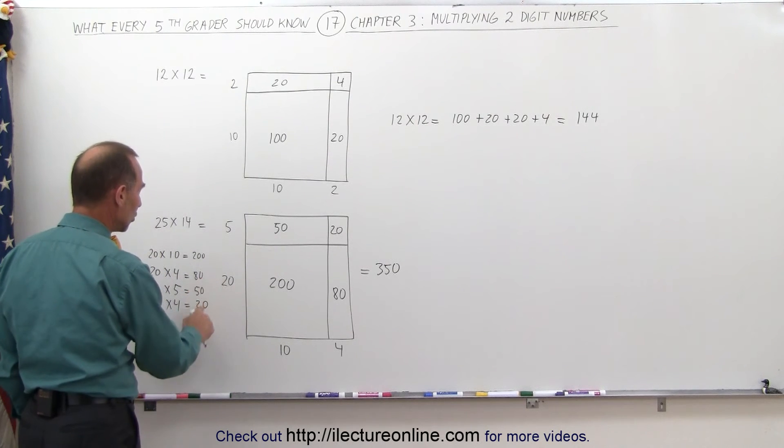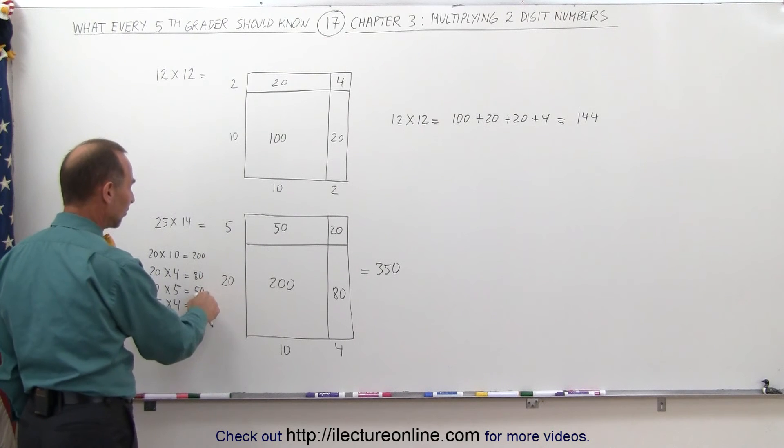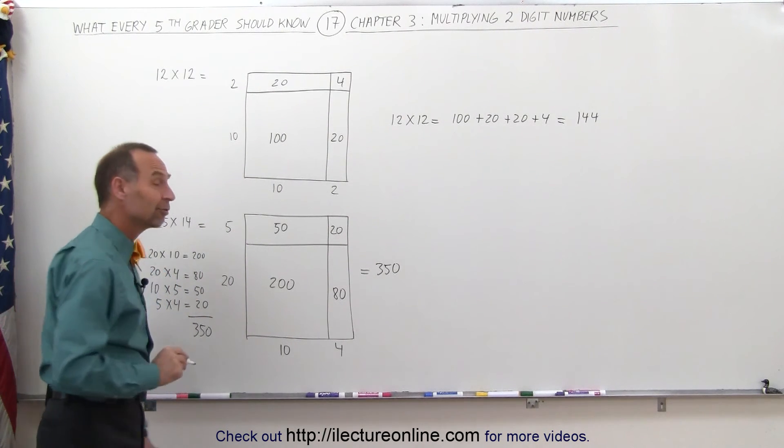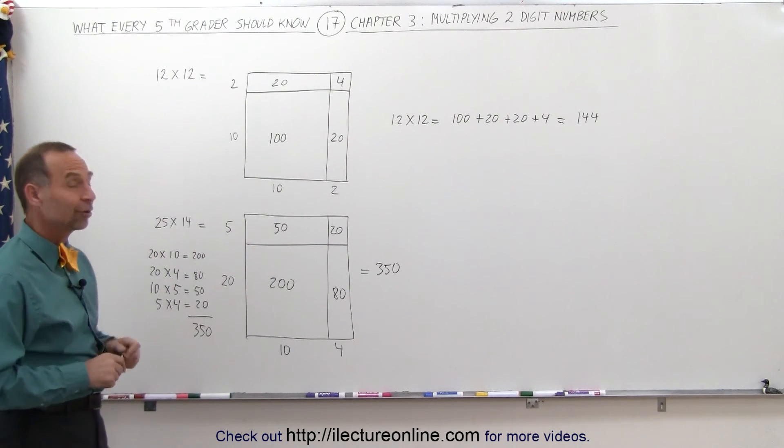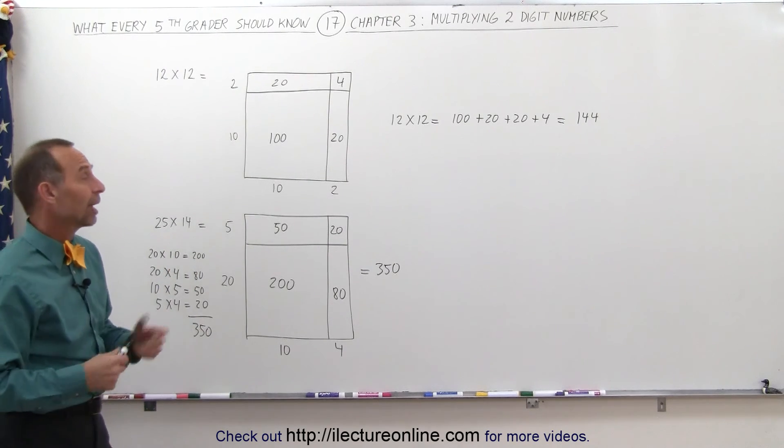And then it's easy to add the 80 and the 20. That gives me 100. Add up to 200 gives me 300. Add up to 50 gives me 350. All together, when I multiply 25 times 14, I get 350. So it's a really neat technique. And I would think you should practice that a number of times.